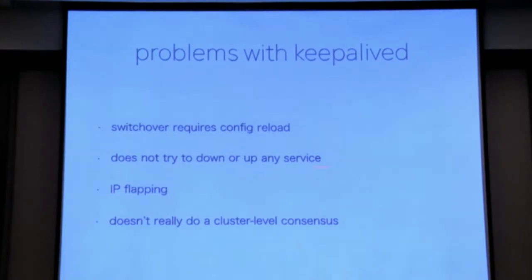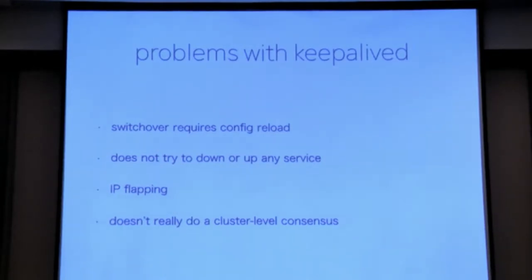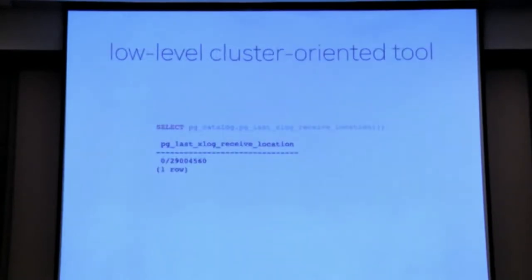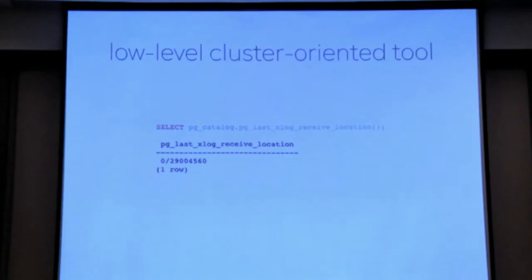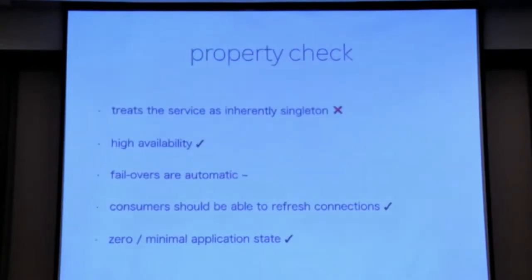Keepalived doesn't have any idea about the service being up at the database level — it only knows if the node is up. It's kind of like a ping check. It does IP flapping — the scenario where the IP is reclaimed by the original master is called flip-flopping. It also doesn't do cluster-level consensus, meaning it has no idea how far behind a standby is lagging from the master. It could handle this, but it's not a low-level cluster-oriented tool — you would have to write that on your own. So a quick property check shows this approach fails immediately.